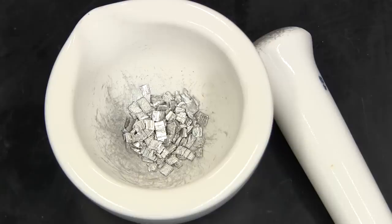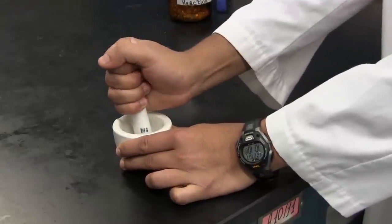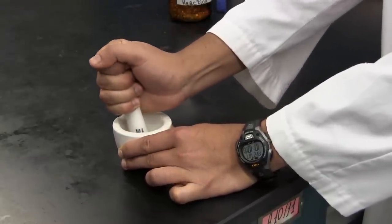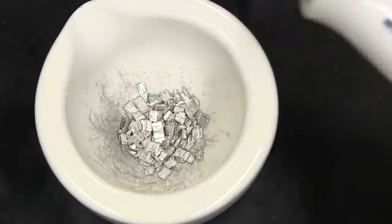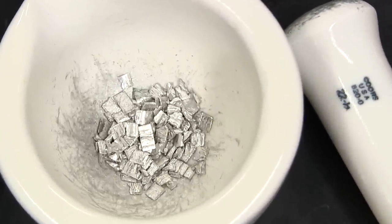Thoroughly grind the magnesium turnings with the mortar and pestle. This is an important step as it exposes more surface area of the magnesium for the reaction to take place. This is what your ground up magnesium turnings should resemble.